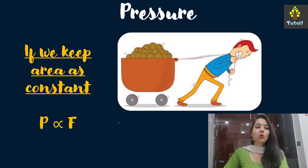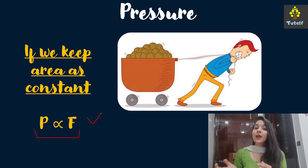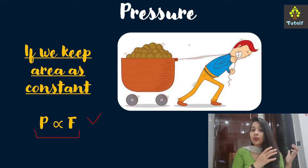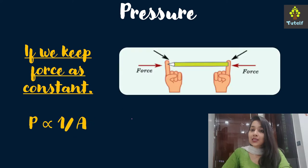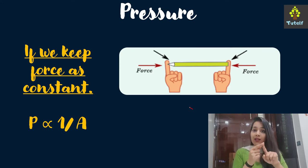From the formula pressure equals force upon area, pressure is directly proportional to force when area is kept constant. So as you keep increasing the force applied on an object, the pressure also increases. Similarly, if force is kept constant, pressure is inversely proportional to area.